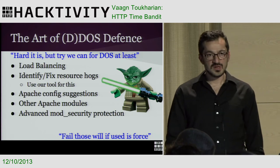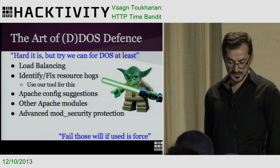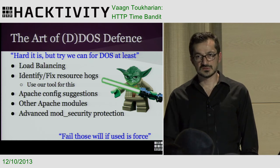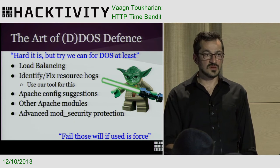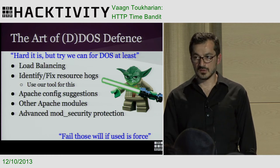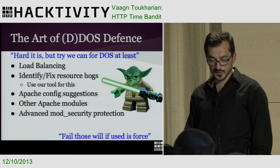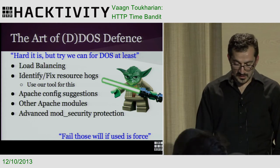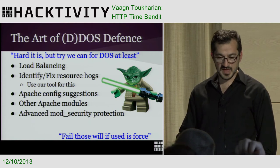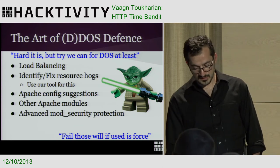Let's figure out what can be done to defend web apps. Standard things include using load balancers and having more servers. A good approach would be to use the tool or similar tools to identify CPU or DB hogs in your web app. Apache configurations could help — we'll go through them in a couple of minutes. Apache with its standard configurations probably wouldn't fight this well, but there are many modules that will help.